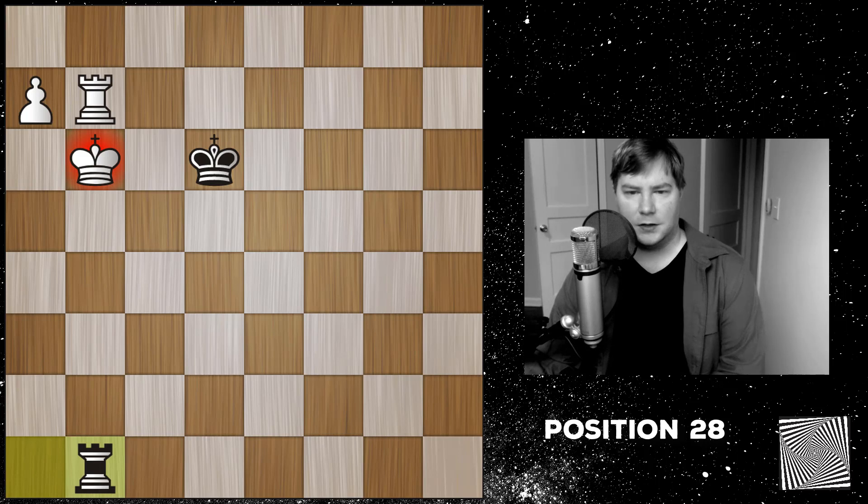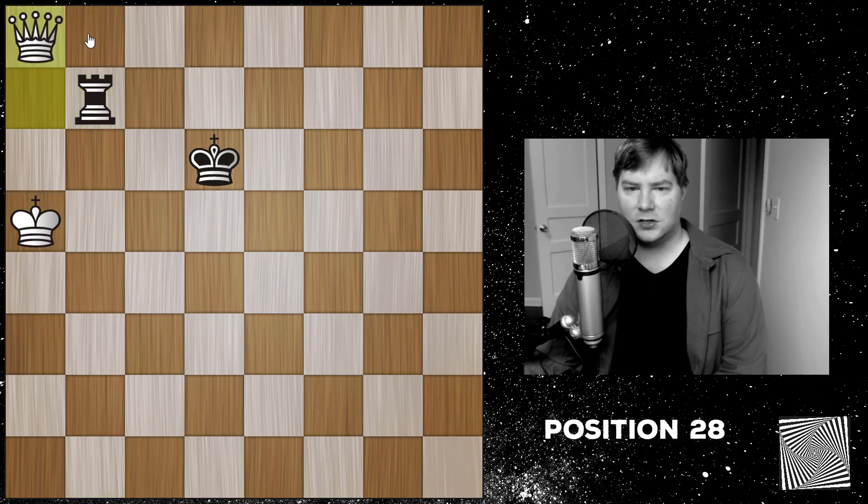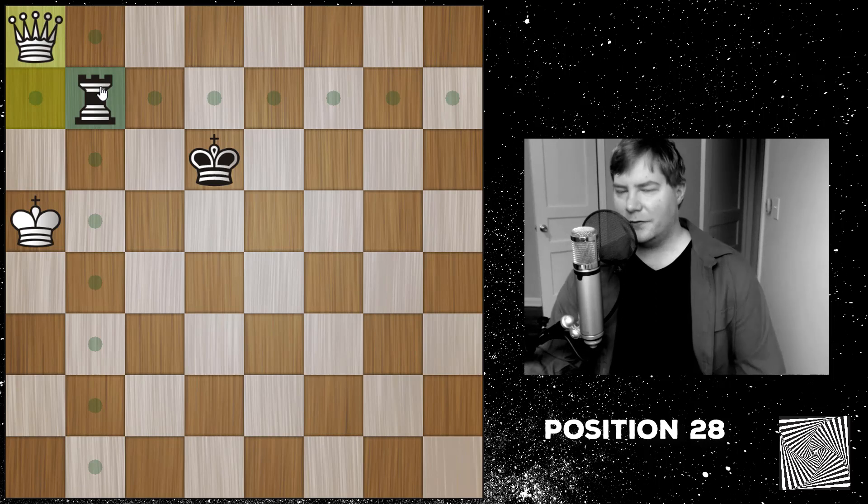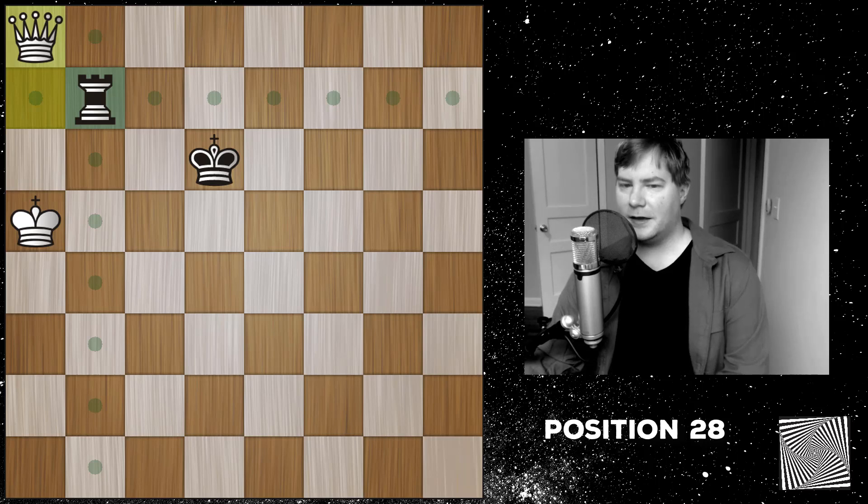Rook to b1 check, and now white has a trick of his own. He can move away from his own rook. If the rook takes, then actually we get a queen versus a rook, which is kind of a hard ending to win, but theoretically, queen versus rook is a win. So we'll have to count it as that. I'd encourage you to learn how to win a queen versus a rook endgame, and I'll make a video about it in the future.